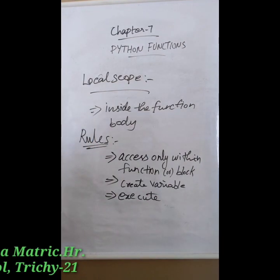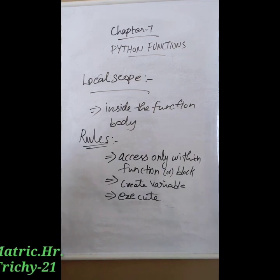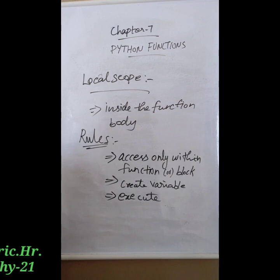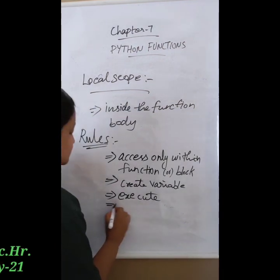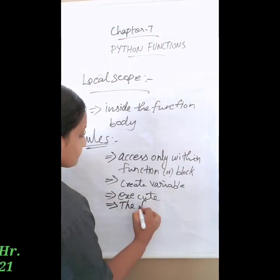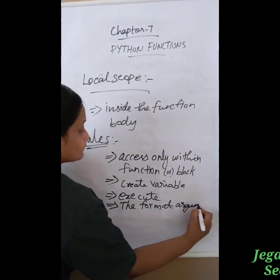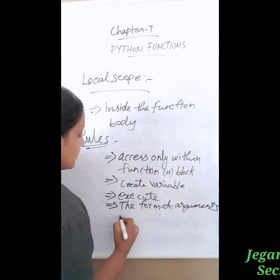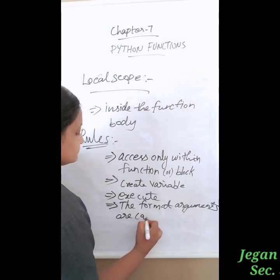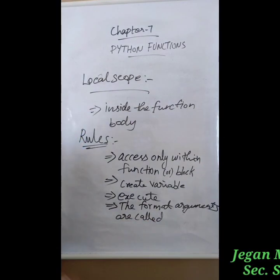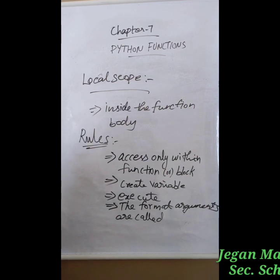A variable only exists when the function is being executed. The fourth rule: formal arguments are also called local to the function — formal arguments are also considered local to that function.